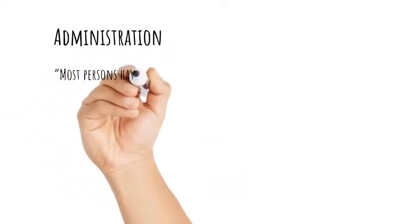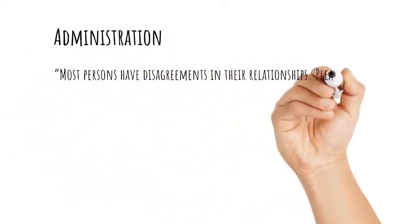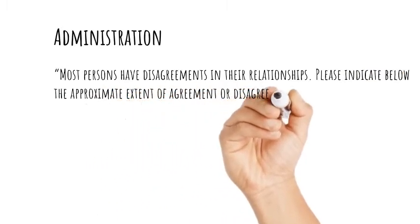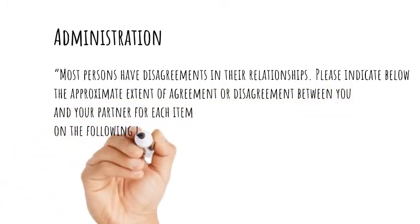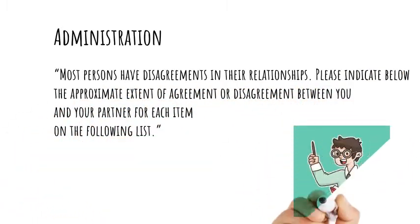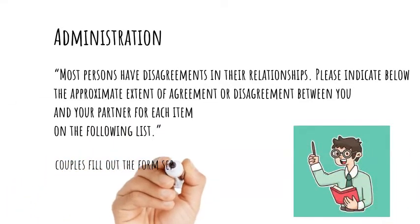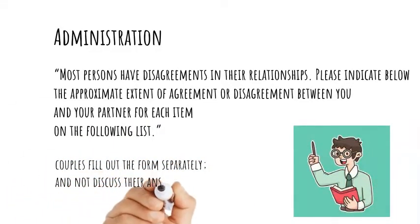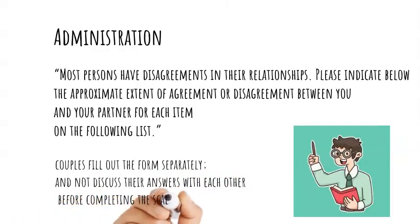The instructions of the test are clear and concise: 'Most persons have disagreements in their relationships. Please indicate below the approximate extent of agreement or disagreement between you and your partner for each item on the following list.' Couples are to fill out the form separately and not discuss their answers with each other before completing the scale.